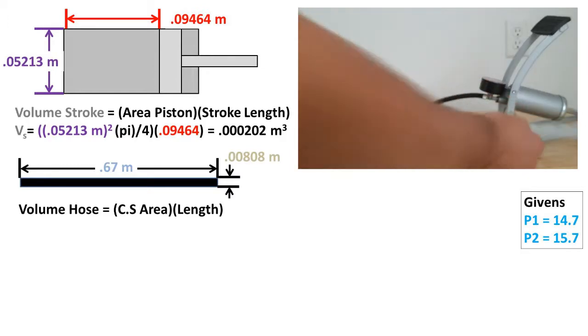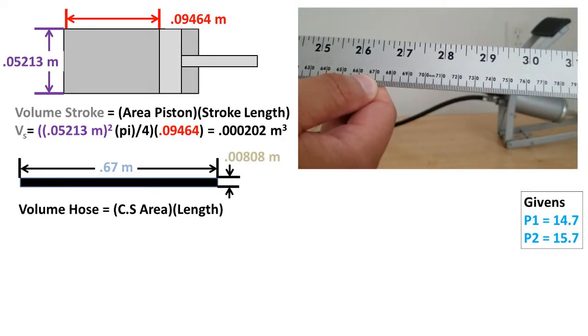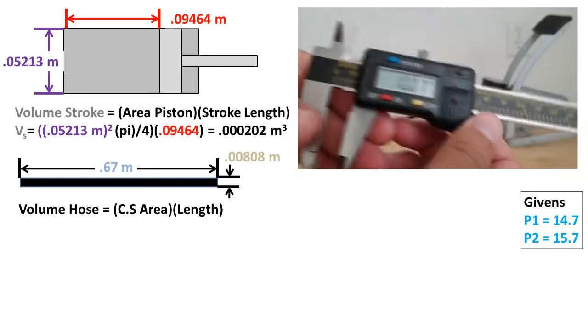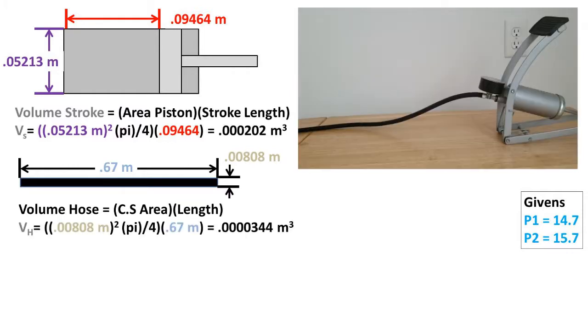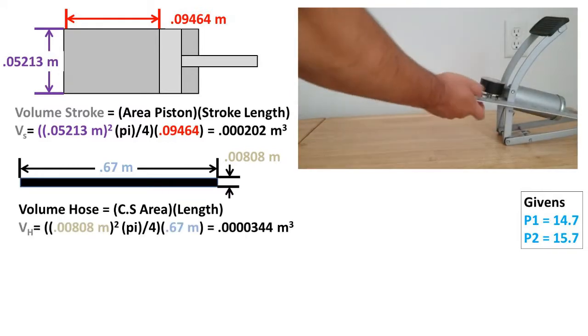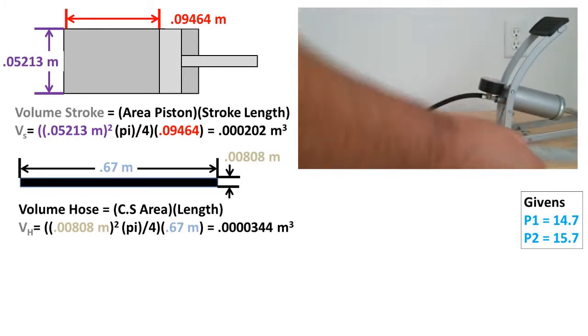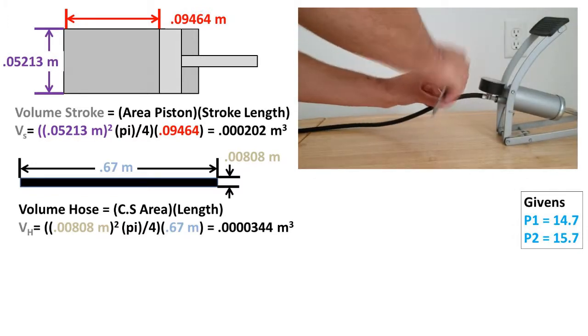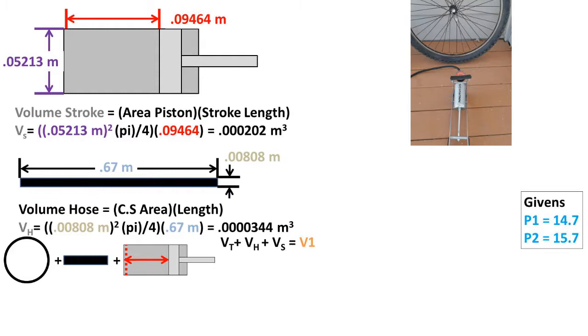Now we must find the volume of the hose attached to the pump. We are given a length of 0.67 meters and a diameter of 0.00808 meters. Plugging our numbers into the volume of a cylinder formula, we get a volume of 0.000034 meters cubed.